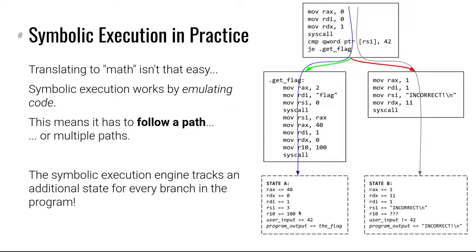Here it is the user input being 42 versus the user input not being 42, because that is what the compare instruction checked and the jump instruction acted on. Once those states diverge, they start doing different things.